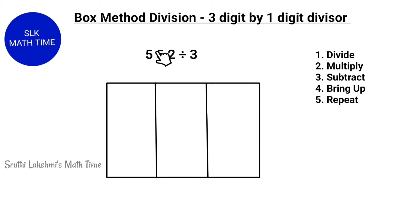Now, we write each of these 3 digits into one of these sections like this: 5, 5 and 2. Next, we write our divisor outside the box like this. Now, let's look at the steps. These steps are very similar to the normal long division. But, instead of bringing down, we bring up.